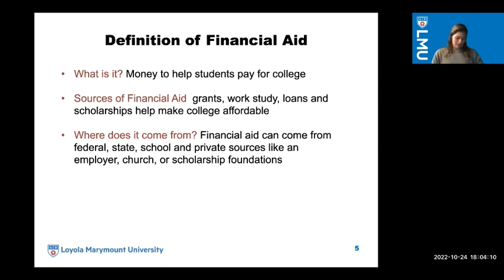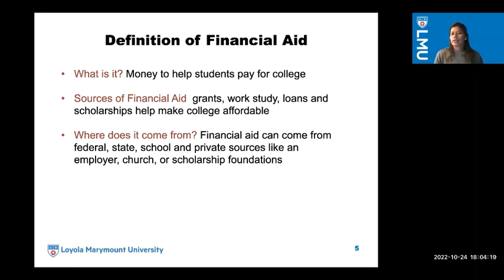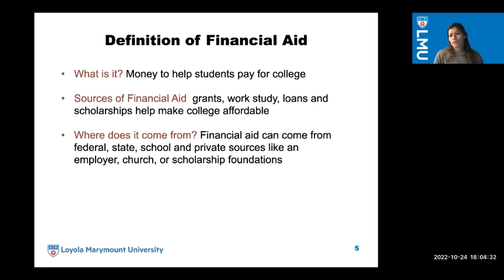Let's dive right in — definitions of financial aid. So what is it? It's money to help students pay for college. The sources of financial aid entail grants, work-study, loans, and scholarships that help make college affordable. Financial aid can come from federal, state, school, and private sources, like an employer, church, or scholarship foundations.